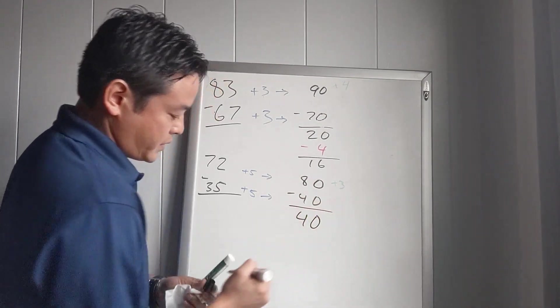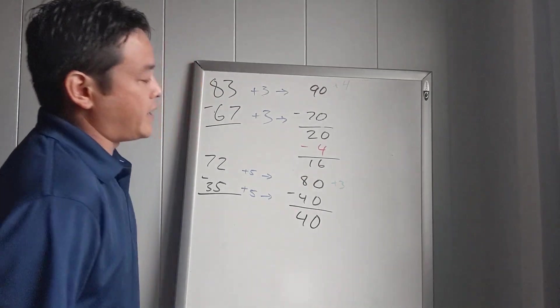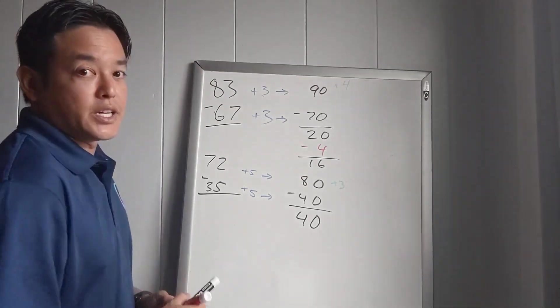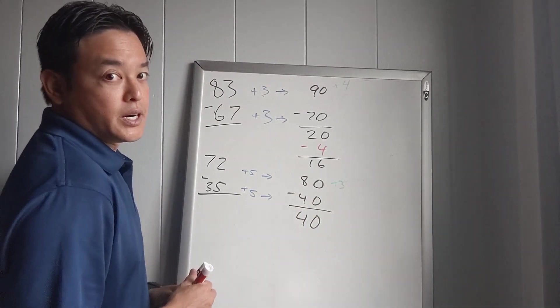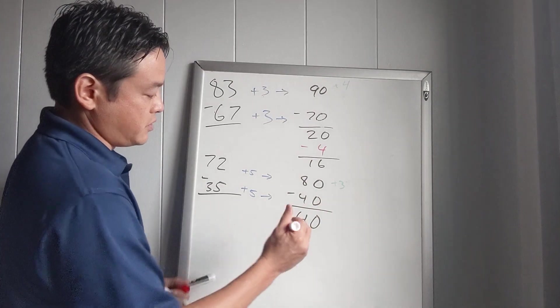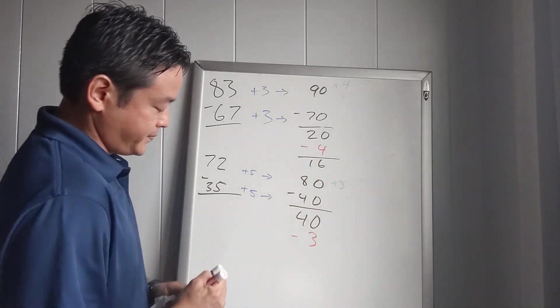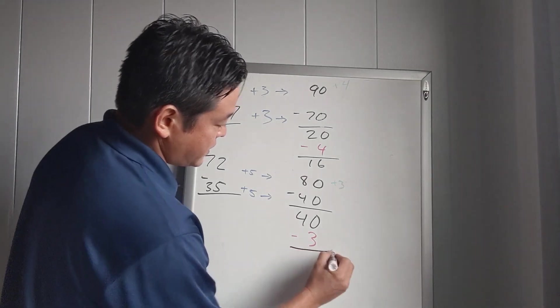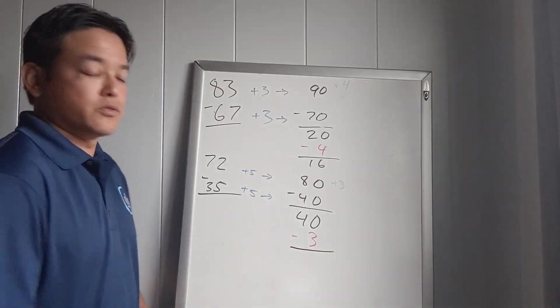Now 80 minus 40 is 40. But the last step, remember, we have to subtract 3 here because we added 3 up here but did not add 3 here. So subtract 3. So now we have 40 minus 3, which is 37.